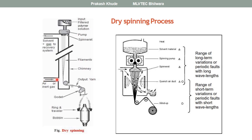Nitrogen gas or another inert gas along with hot air is passed through the system. The solvent used for dissolution of the polymer is recovered or evaporated by means of hot air. The filament then passes over godets and is wound onto a bobbin with the help of a ring winding system.